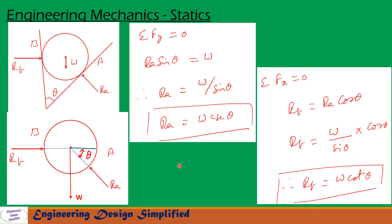So we now have Ra equal to w cosecant theta — that is the reaction of the inclined plane on the sphere — and Rb equal to w cot theta — that is the reaction of the vertical plane on the sphere.